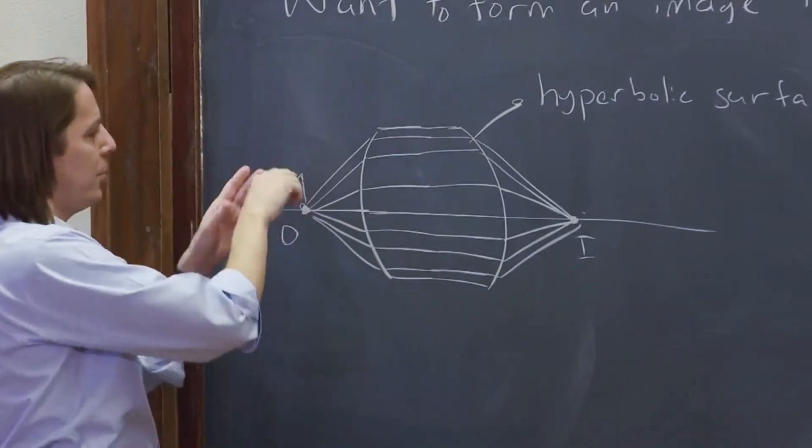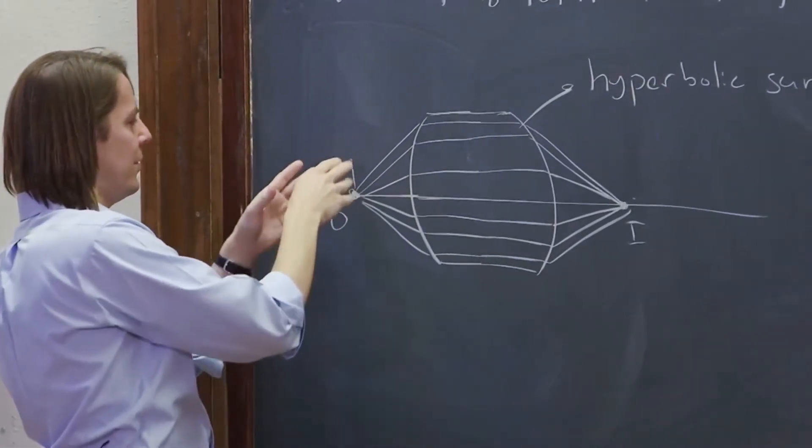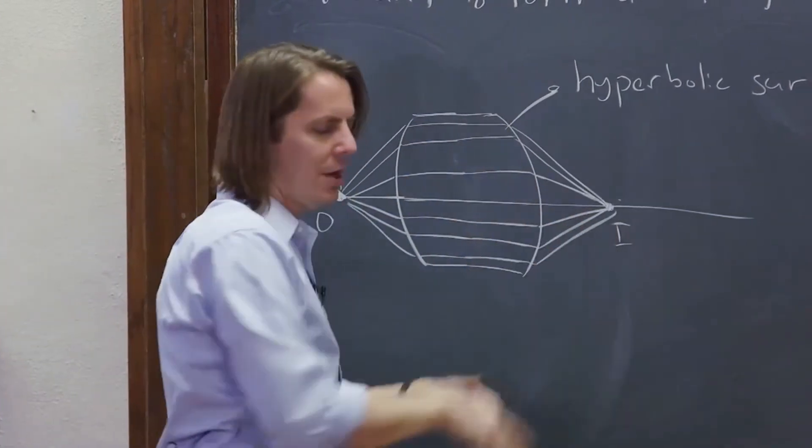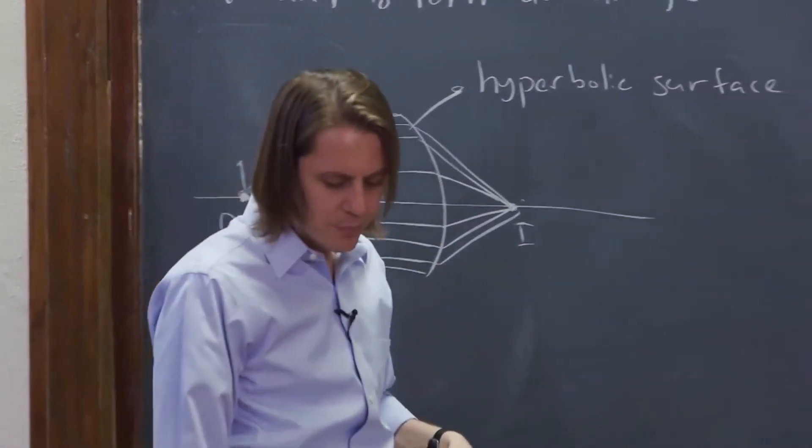And if we had an object here, soon we'll be ray tracing and imagining. If you have an object with an extended object, making little points of light, they'll all come together and make an image. Well,